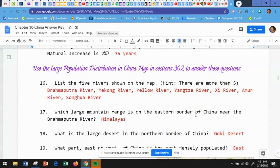Now you're going to use the population distribution in China map in sections 30.2 to answer the following questions. So number 16, list the five rivers shown on the map. Well, there are more than five, but here are the ones that I saw. The Brahmaputra River, the Mekong River, the Yellow River, the Yangtze River, the Xi River, the Amur River, and the Songhua River. Pardon my pronunciation on those. Number 17, which large mountain range is on the eastern border of China near the Brahmaputra River?